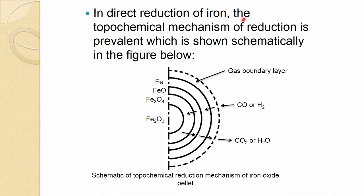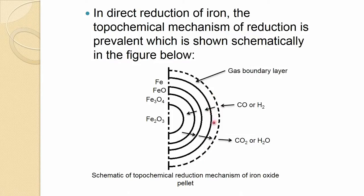In direct reduction of iron, the topochemical mechanism of reduction is prevalent, which is shown schematically in the figure below. This shows the half cross-section of a spherical pellet — a dense pellet of iron oxide, like Fe₂O₃. When the reducing gas, CO or hydrogen, comes into contact with the surface of the particle...